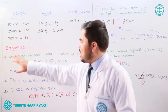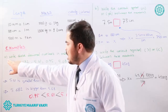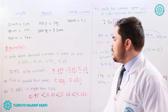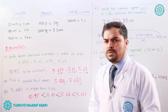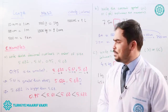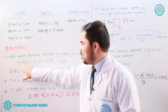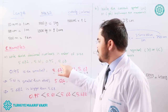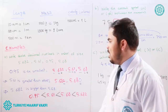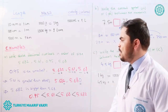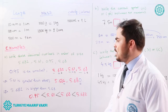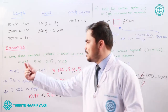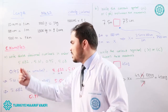Now we will solve examples. The first example asks us to write these decimal numbers in order of size — identifying which is bigger and which is smaller. The numbers are: 5.682, 5.61, 0.95, and 5.68. When comparing decimal numbers, we first look at the whole part.